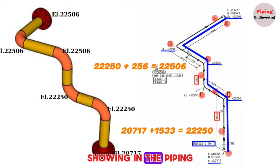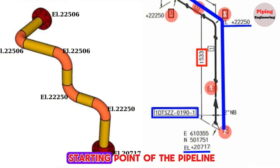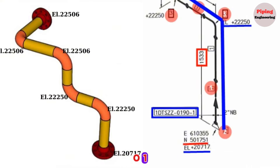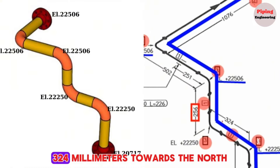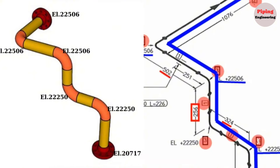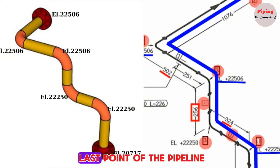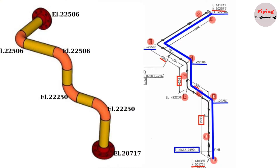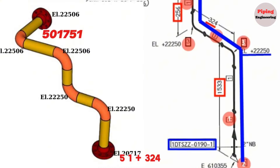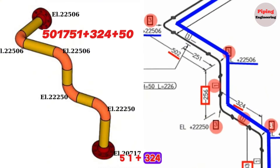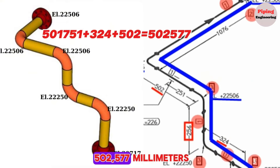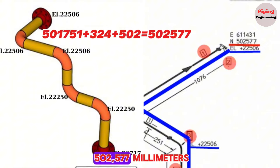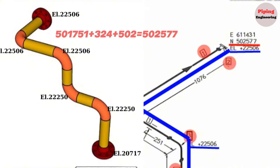Now let's check the north coordinates shown in the piping isometric drawing. The north coordinate of the starting point of the pipeline is 501,751 millimeters. The pipeline first traveled 324 millimeters towards the north and then 502 millimeters further north. We can easily calculate the north coordinate of the last point: 501,751 plus 324 plus 502 equals 502,577 millimeters.